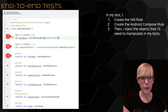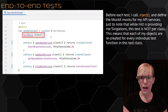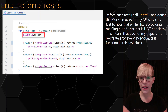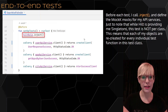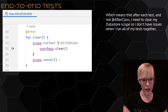In my test, I create the Hilt rule and the Android Compose rule. Then I inject everything that I need to manipulate in my test. Before each test, I call Hilt rule dot inject and define the MockK mocks for my API services. Note that while Hilt is providing me singletons for the most part, this test is not scoped per class — so everything created will be recreated for each individual test. That means after each test, I need to clear my datastore scope so I don't have issues when I run all of the tests together.